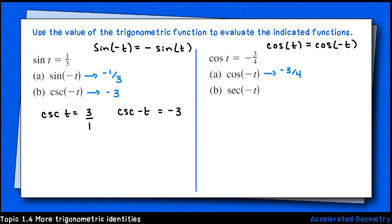For part b, we're looking at sec(-t). Let's start by just finding sec(t). Secant is the reciprocal of cosine. So if cos(t) = -3/4, then sec(t) will be -4/3. Next, we will need to recall that secant is also an even function. That means sec(t) and sec(-t) are equal. So part b will be -4/3.